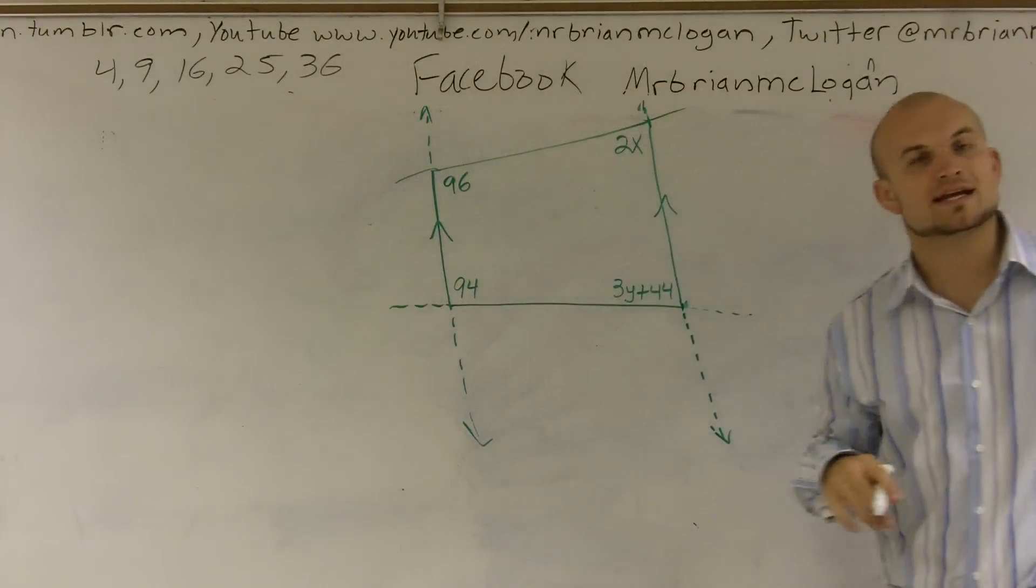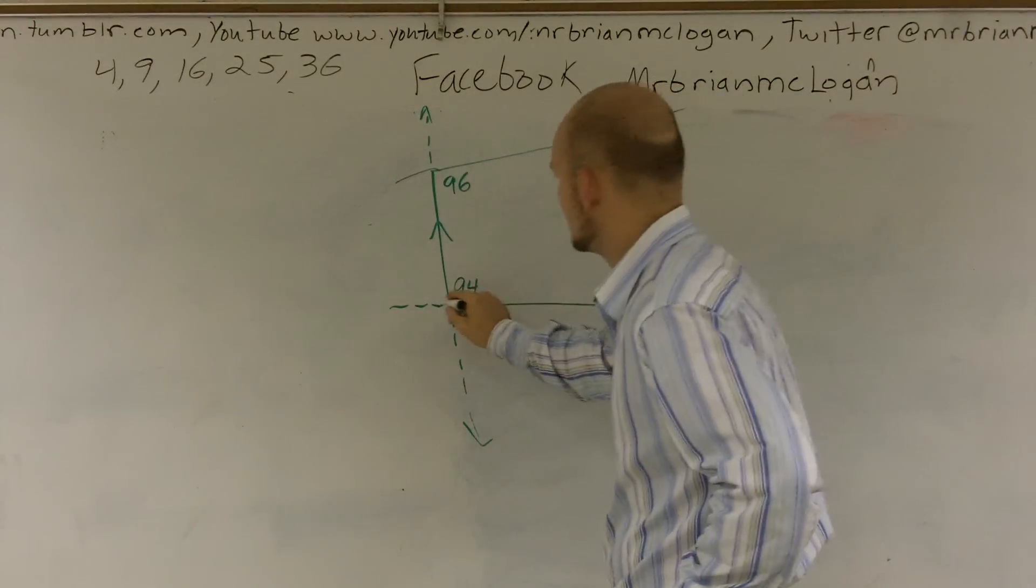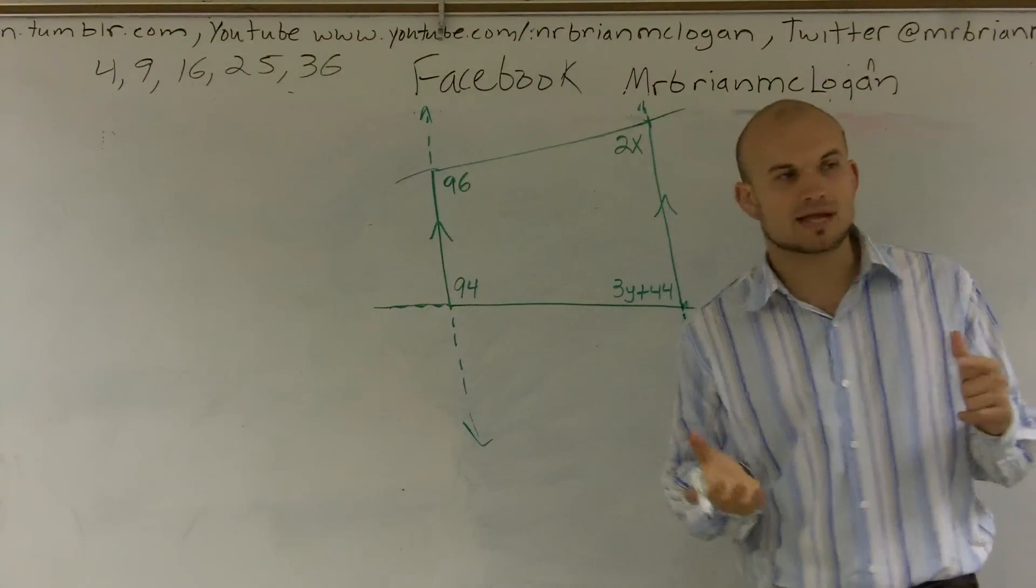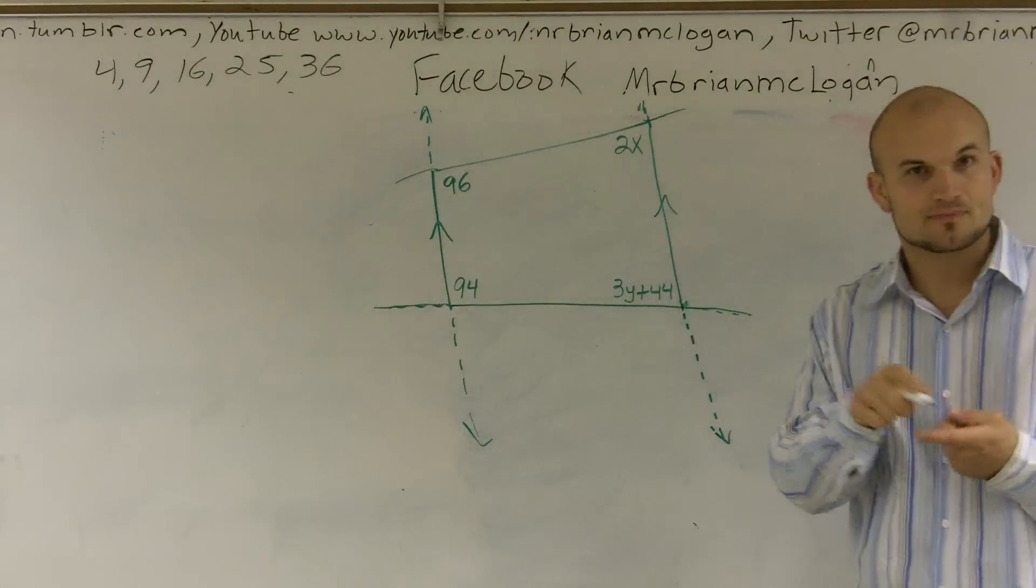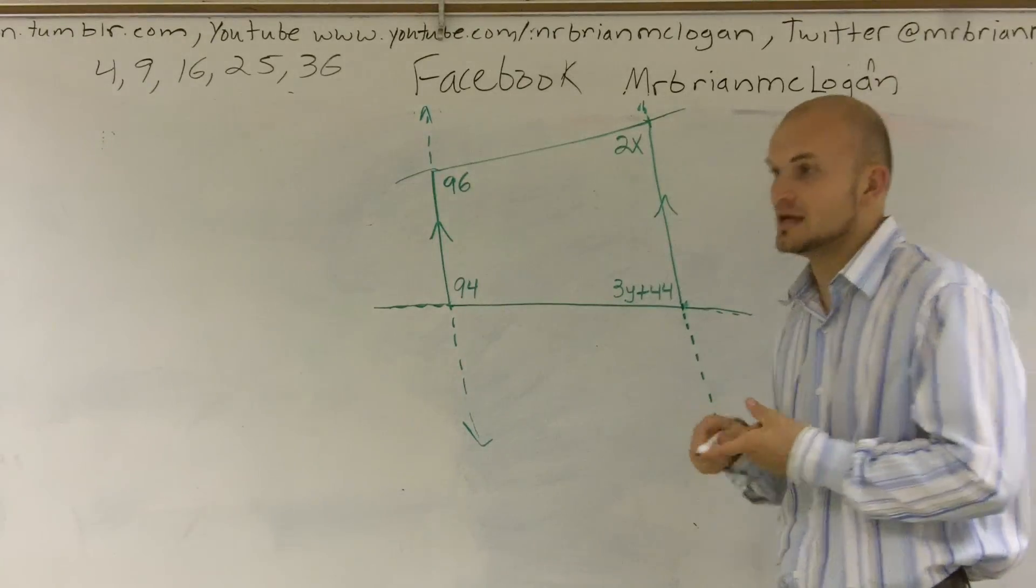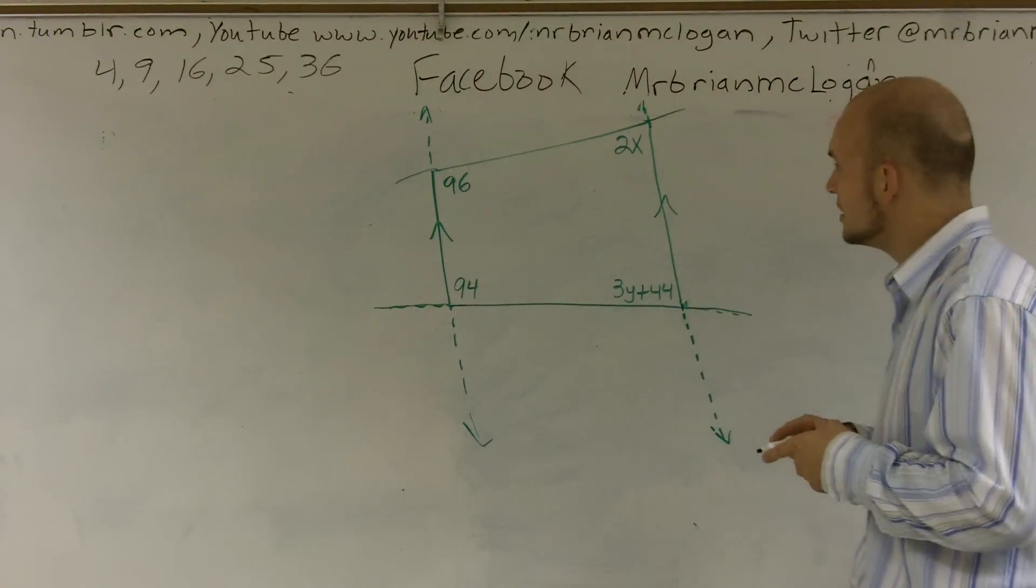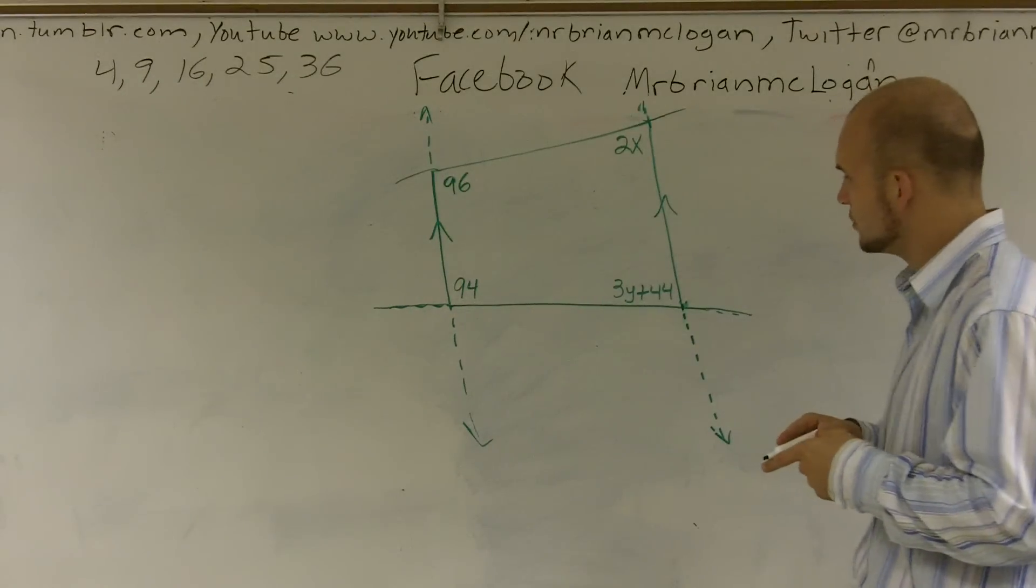What's important about this is we know that when we have parallel lines and a transversal, we have alternate interior angles, corresponding angles, and same-side interior angles. One thing that you should know about same-side interior angles is that 94 plus 3y plus 44 equals 180 degrees.